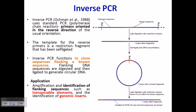In inverse PCR, the primers are oriented in the reverse direction of the usual orientation. This is a very clever and intelligent procedure. It is utilized to clone sequences which are unknown, flanking a known sequence.